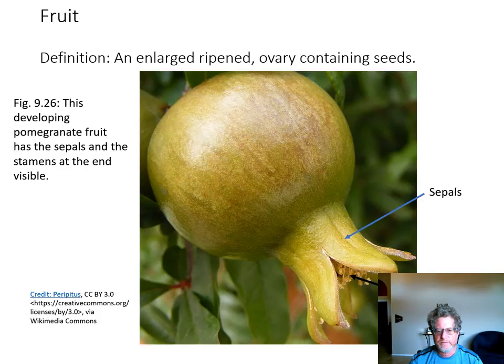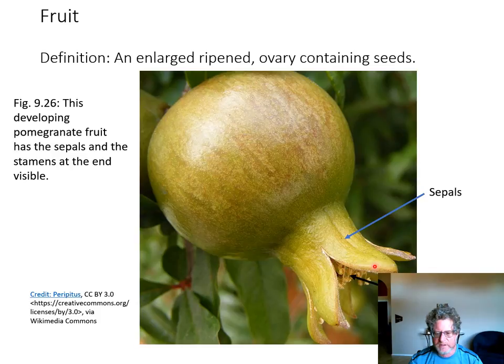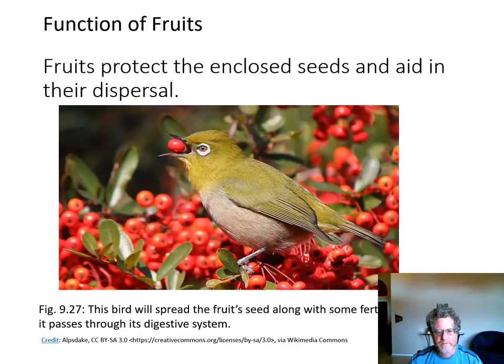A fruit is an enlarged ripened ovary containing seeds. Here is a pomegranate fruit hanging upside down — you can see that before it developed into a fruit there was the flower, and the sepal is still clearly visible. The stamens have turned brown but are still present. Fruits protect the seeds inside and help in their dispersal — here's a bird eating the fruit, which will digest the outside but spread the seeds along with a little fertilizer.